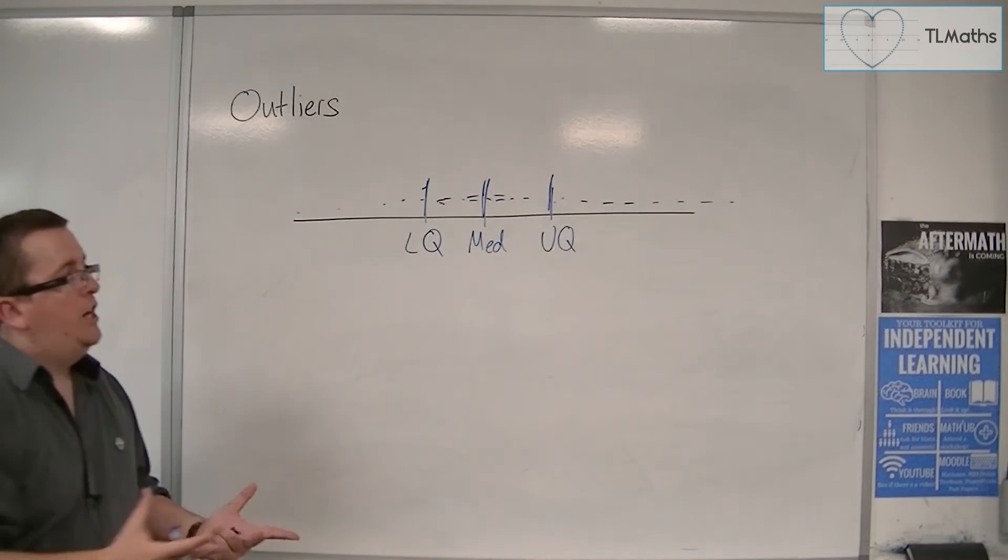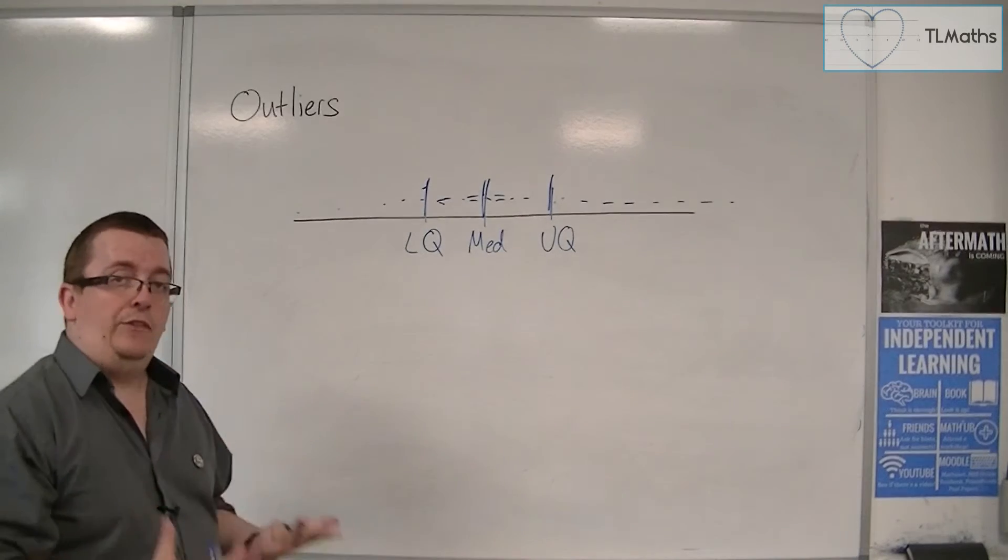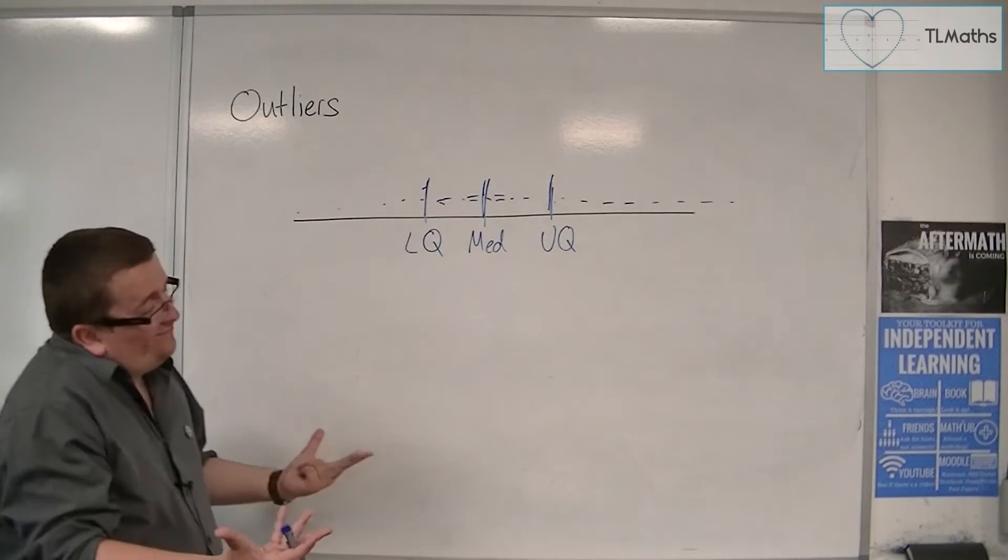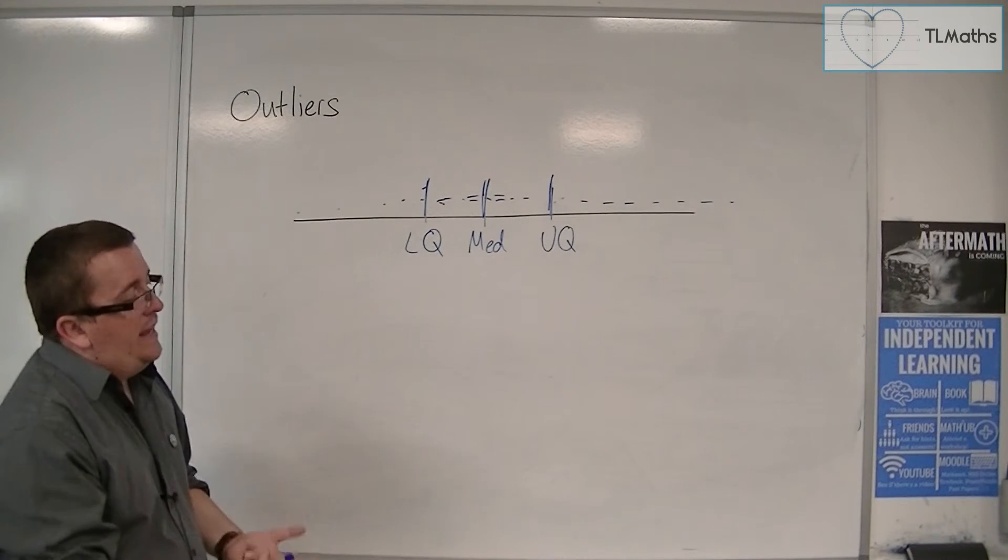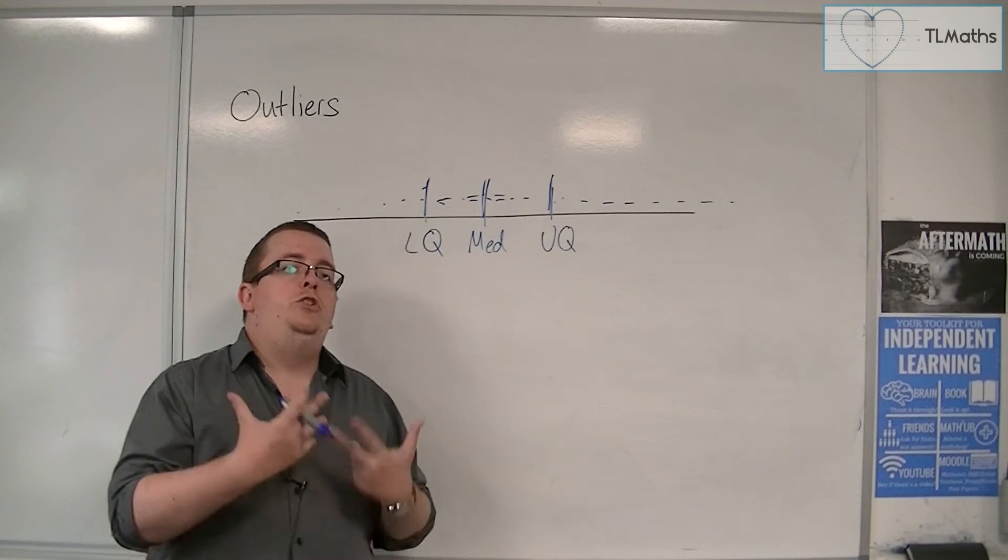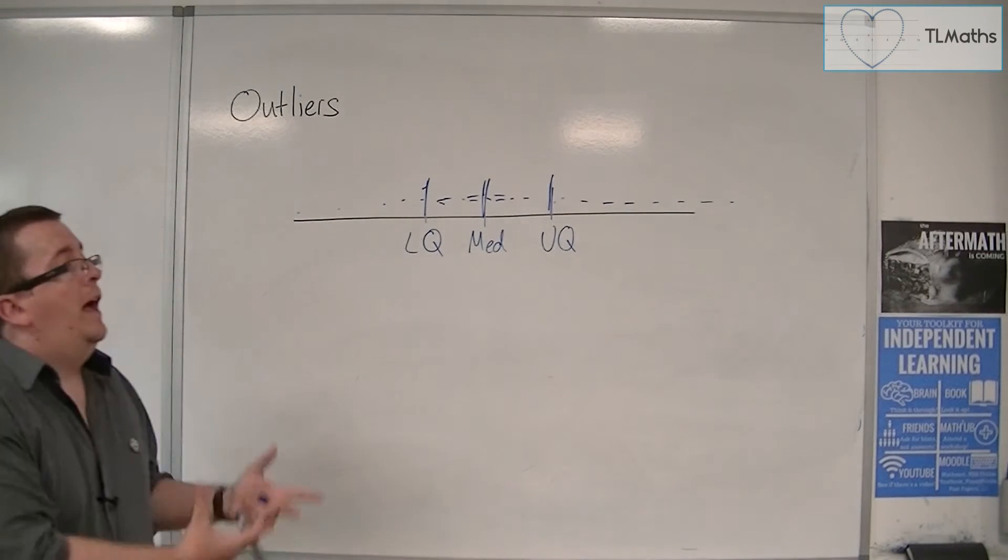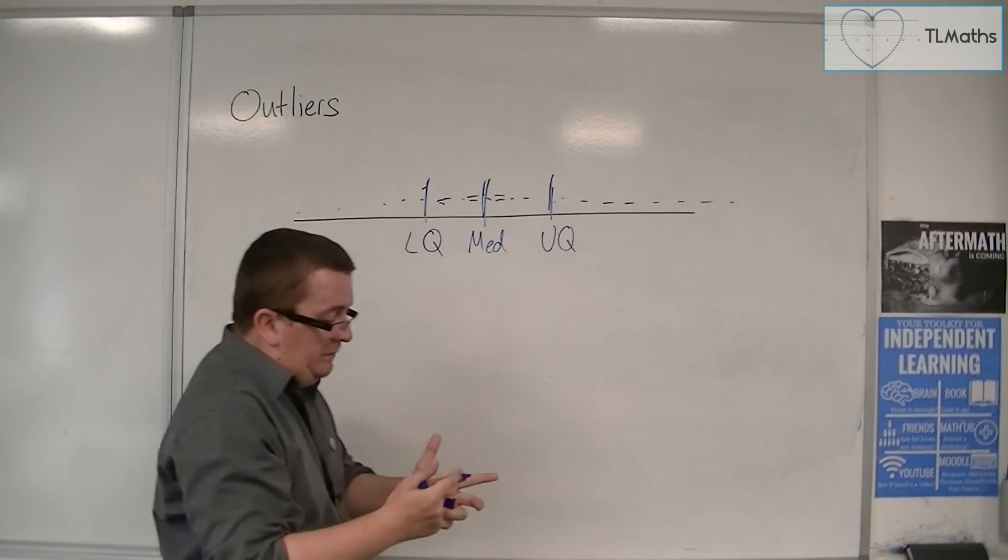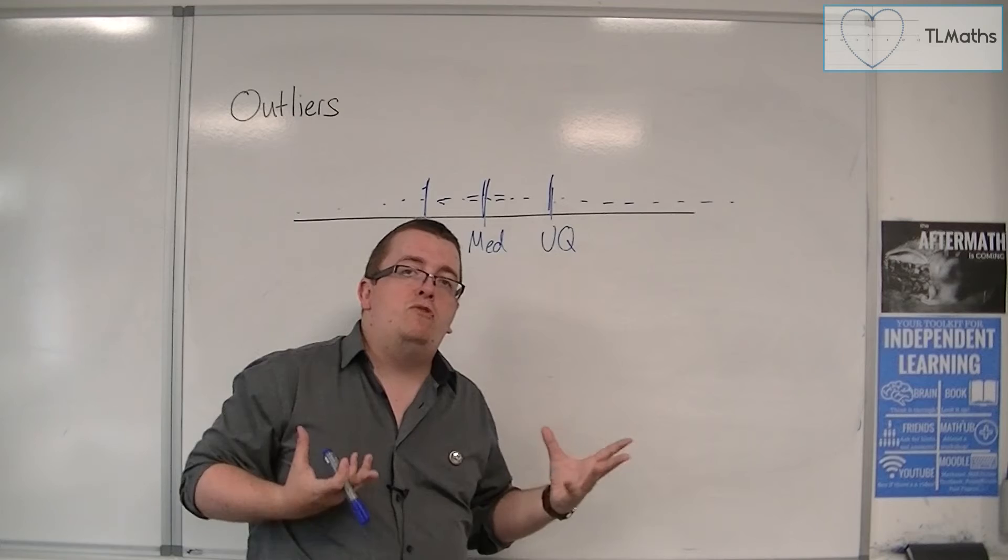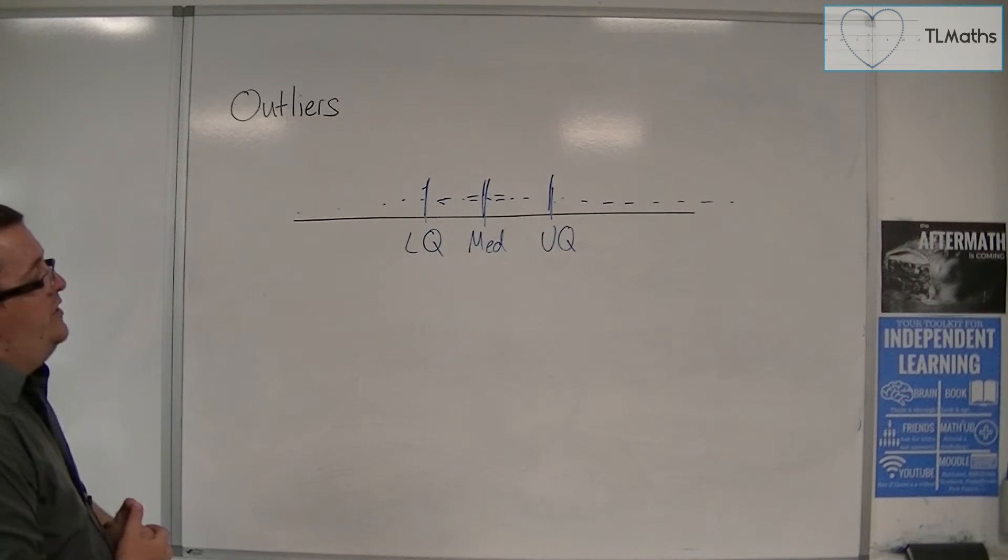We need to determine whether there are any bits of data which may be regarded as outliers. Why would you need that? Well, the real thing is that ultimately, is there data that perhaps you can ignore, or is there data that is in the extremes? Is there anything that we need to take into account?